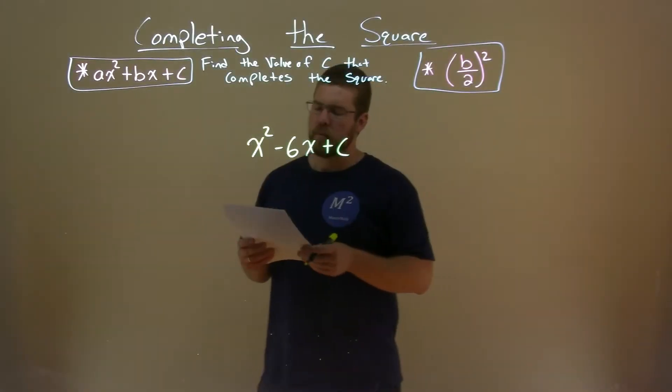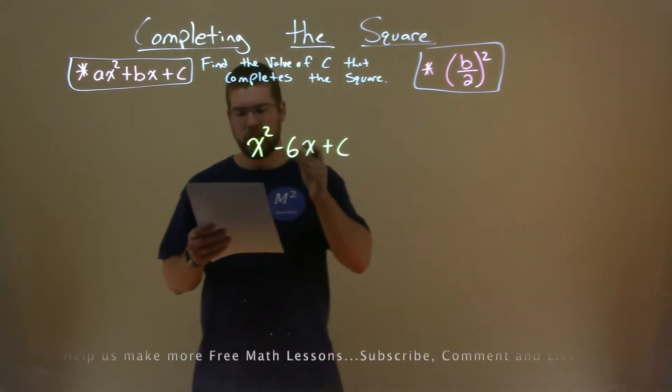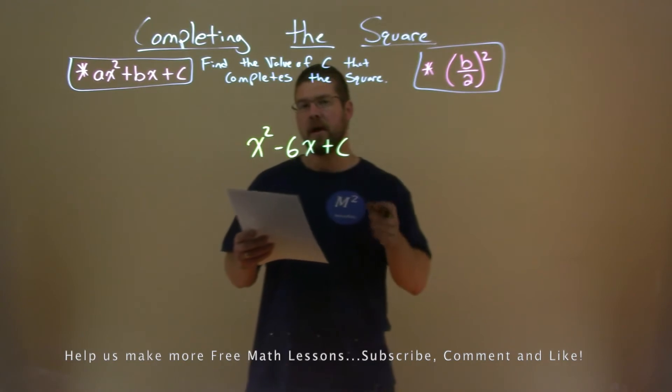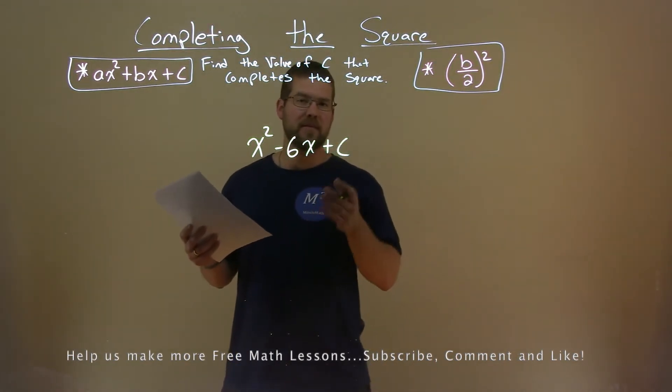We're given this problem right here x squared minus 6x plus c and we want to find the value of c that completes the square.